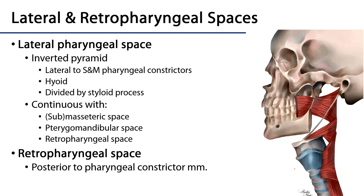I want to discuss briefly the lateral pharyngeal space and its relationship to the retropharyngeal space. Here we can see the superior pharyngeal constrictor and the middle pharyngeal constrictor, so we know the retropharyngeal space is going to be behind this. There's also a lateral pharyngeal space, which is conceptualized like an inverted pyramid — the base of the pyramid is up near the skull base and it comes down to about the hyoid region. That lateral pharyngeal space is contiguous with the retropharyngeal space, and it gets divided by the styloid process.